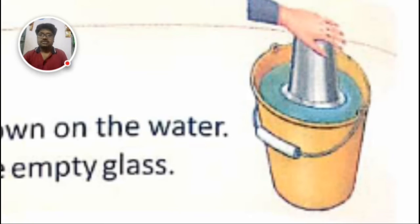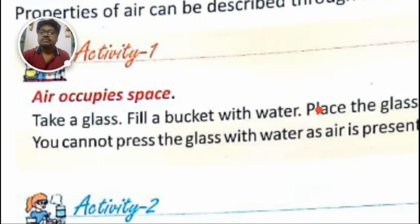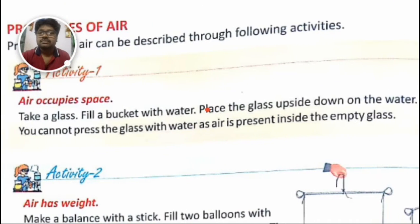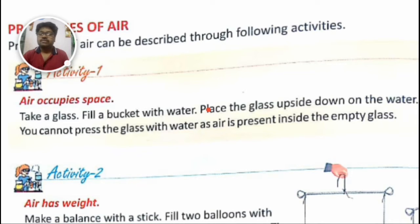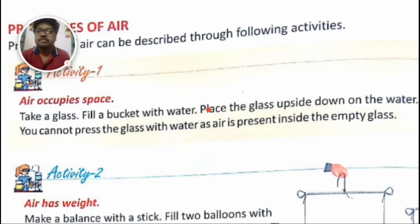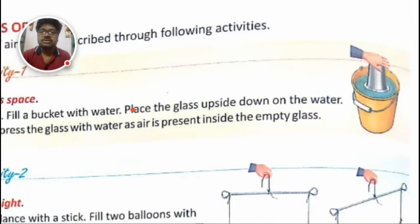If you slowly turn the glass to a side, you will see air bubbles coming out from the glass. You can try this at home. The text here says: take a glass, fill a bucket with water, place the glass upside down in the water — you cannot press the glass into the water easily because air is present inside. This experiment shows that air occupies space.